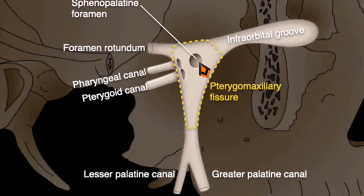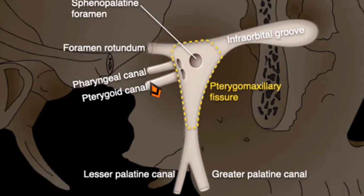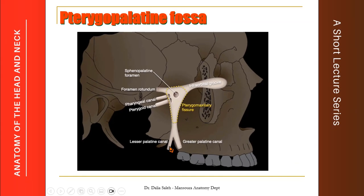This is another view of the pterygopalatine fossa and its connections. We have here on the medial wall the sphenopalatine foramen, which opens into the nasal cavity. Posteriorly, we have three foramina: foramen rotundum to the middle cranial fossa, the pharyngeal canal to the nasopharynx, and the pterygoid canal into the base of the skull. Superiorly, we have the inferior orbital fissure, which leads to the orbit. Below, we have the palatine canal, which splits into the greater palatine canal and the lesser palatine canal.